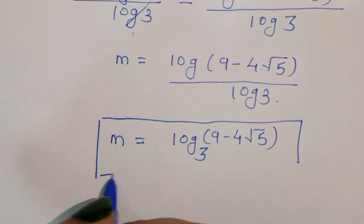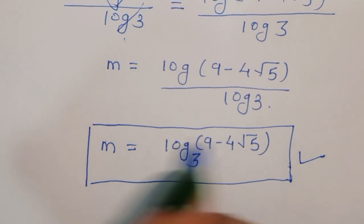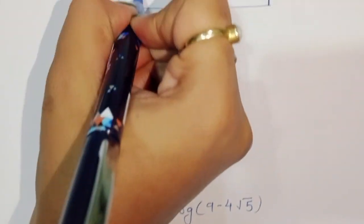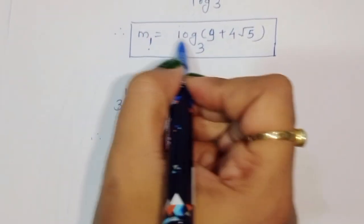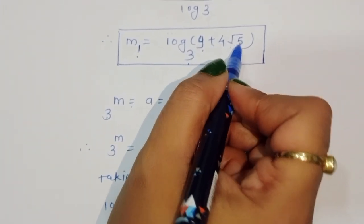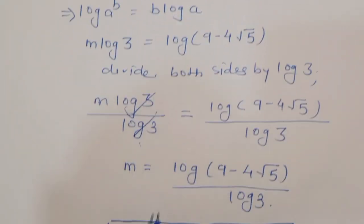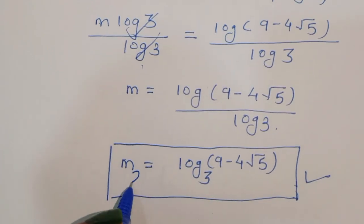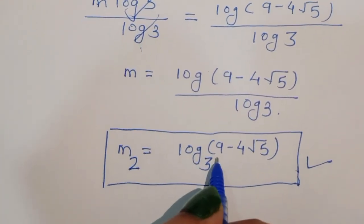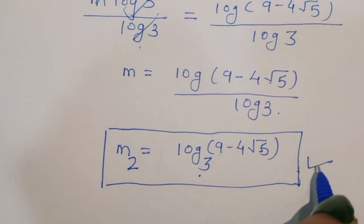So we got two solutions. The first one is m1 is equal to log base 3 of 9 plus 4 square root of 5. And the second one is m2 is equal to log base 3 of 9 minus 4 square root of 5. This is the complete solution. Thank you so much.